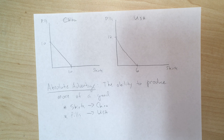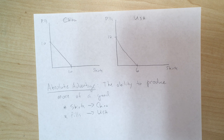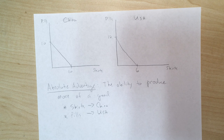Absolute advantage is incredibly simple, so I hope everybody gets that right on a quiz or exam. A lot of people focus on absolute advantage and think it's occurring when they don't really have enough information. For example, if the US isn't producing clothing anymore, that doesn't necessarily mean they don't have the absolute advantage — and that's what you're going to see in this lesson today.